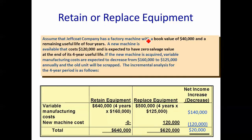Assume Jeffcott Company has a machine with a book value of $40,000, which is irrelevant, and a useful life of four years. A new machine is available. It costs $120,000 and is expected to have a zero salvage value — that is, when sold at the end, it's worthless — and it will last four years. If we acquire the new machine, variable manufacturing costs will go down from $160,000 to $125,000.